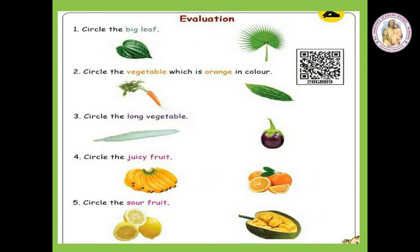Evaluation. Circle the big leaf. Children, see which one is the big leaf. Yes, the second one is the big leaf. Next, circle the vegetable which is orange in color. Which one is orange in color — first one or second one? Yes, first one. Circle it. Then, circle the long vegetable. Which one is the long vegetable? Yes, first one. Circle it. Circle the juicy fruit. Which one is the juicy fruit? Yes, second one — Orange is the juicy fruit. Circle the sour fruit. Which one is the sour fruit? Yes, first one — Lemon.